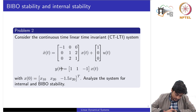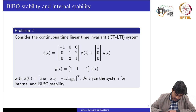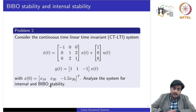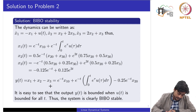Problem 2 deals with a continuous-time LTI system where A is a 3×3 matrix, B is 3×1, and C is 1×3 — a single-input single-output system with given initial conditions, where x₃ is given in terms of the initial condition of the second state. We want to analyze the system separately for internal stability and BIBO stability. Writing explicitly the state-space dynamics gives three equations for x₁̇, x₂̇, and x₃̇.